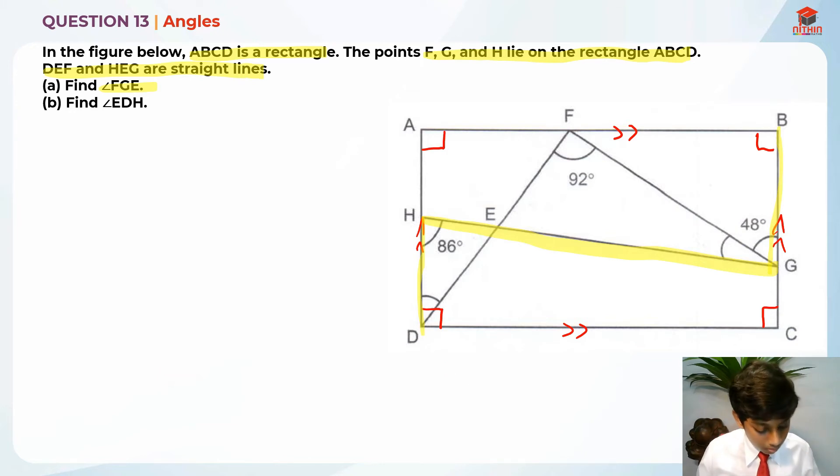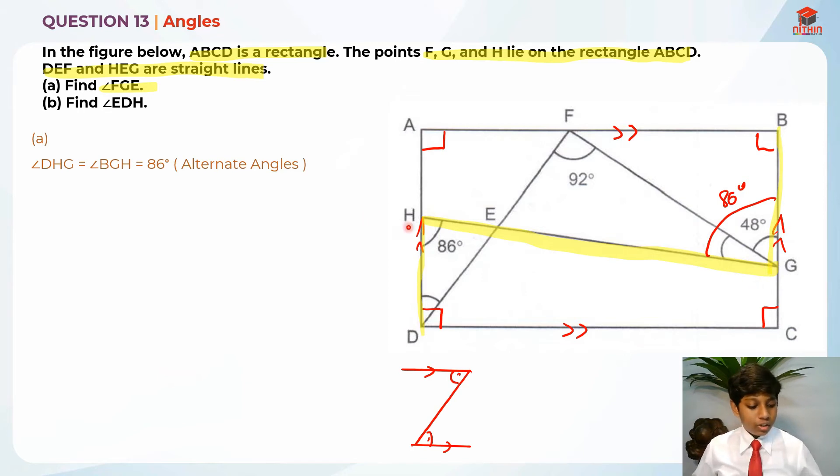Let me draw it more nicer. So two straight lines, and then one connecting line, and then these are parallel. So this angle is equal to this angle. So I hope you understand that. So I'm using this over here as well. So this 86 degrees is actually 86 degrees over here. So angle DHG is equal to angle BGH is equal to 86 degrees. So this is because of alternate angles.